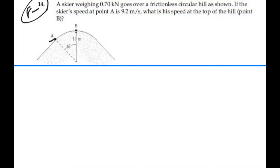Alright, so we're going to have a skier at point A and the velocity at A is 9.2 meters per second.